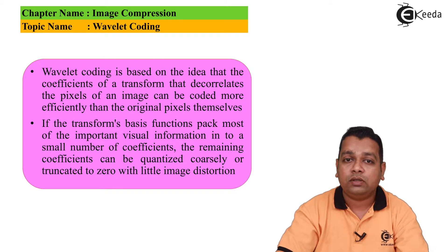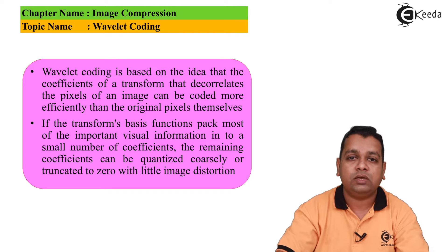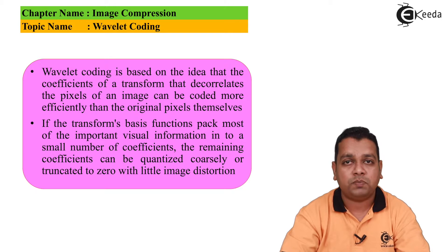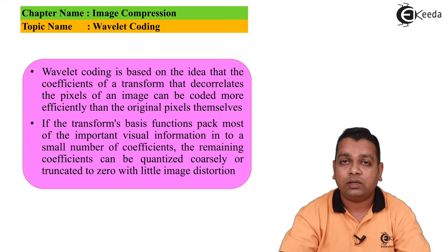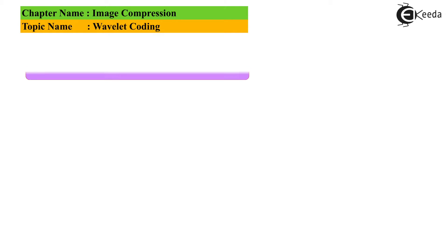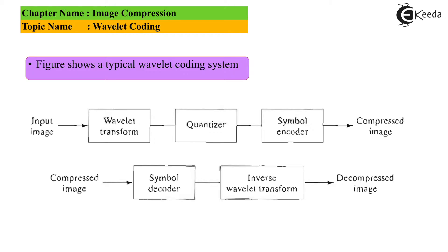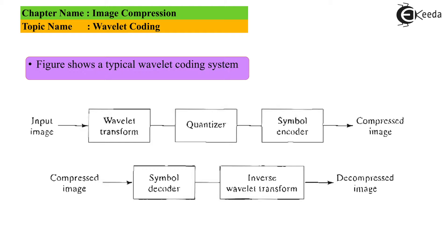If the transform basis functions pack most of the important visual information into a small number of coefficients, the remaining coefficients can be quantized coarsely or truncated to zero with little image distortion. This property is also called the energy compaction property. We have discussed energy compaction with respect to the KL transform, the DCT (discrete cosine transform), and the discrete Fourier transform, and now we address the Wavelet type of coding.